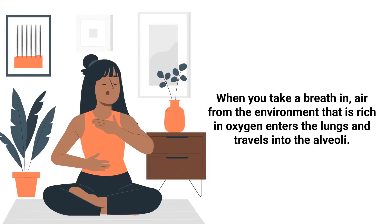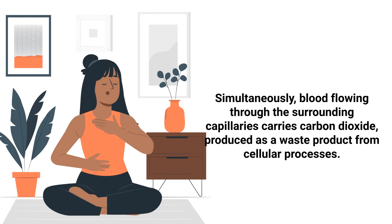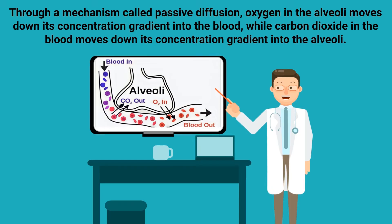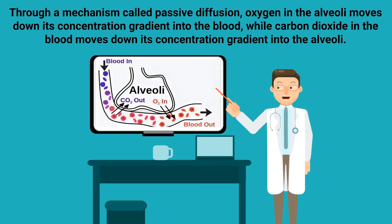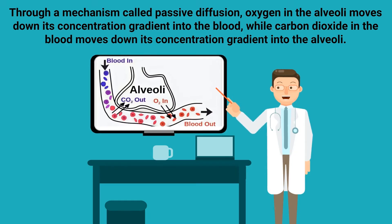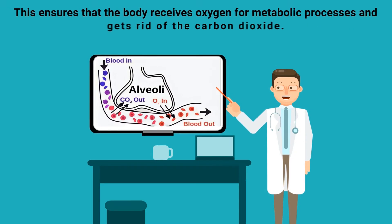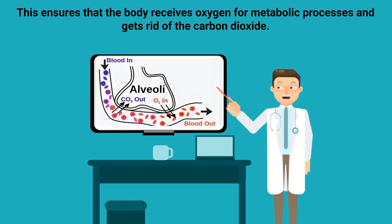When you take a breath in, air from the environment that is rich in oxygen enters the lungs and travels into the alveoli. Simultaneously, blood flowing through the surrounding capillaries carries carbon dioxide produced as a waste product from cellular processes. Through a mechanism called passive diffusion, oxygen in the alveoli moves down its concentration gradient into the blood, while carbon dioxide in the blood moves down its concentration gradient into the alveoli. This ensures that the body receives oxygen for metabolic processes and gets rid of the carbon dioxide.